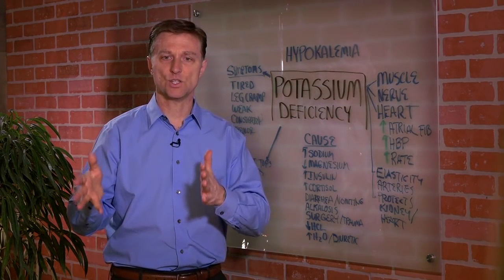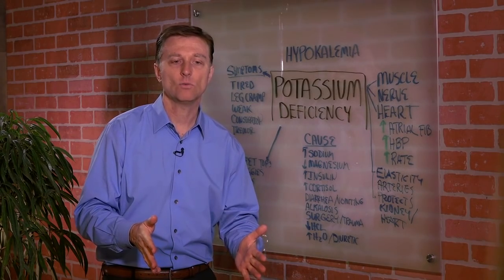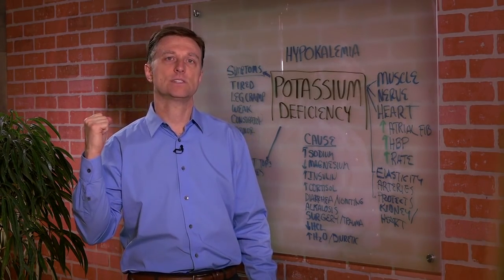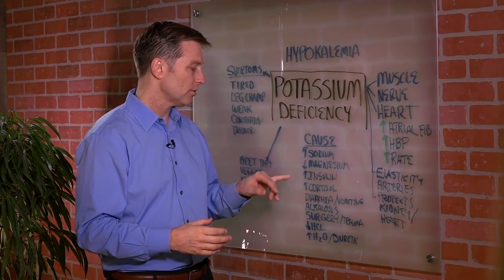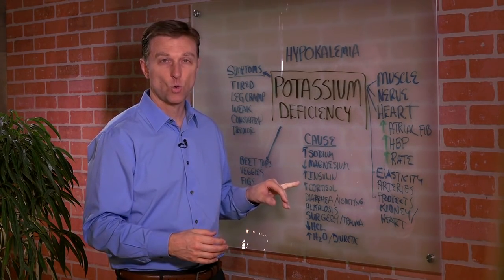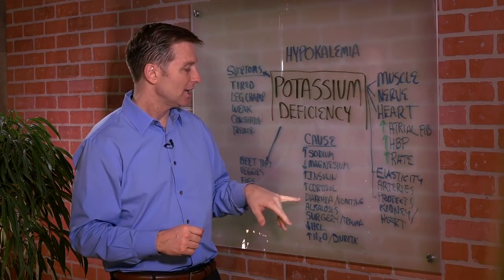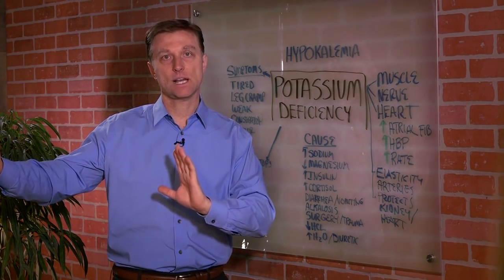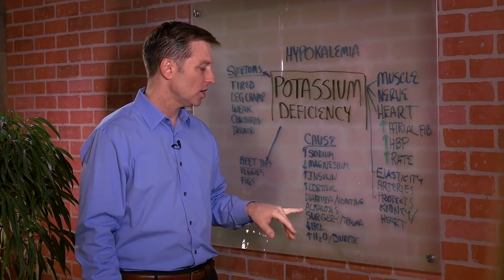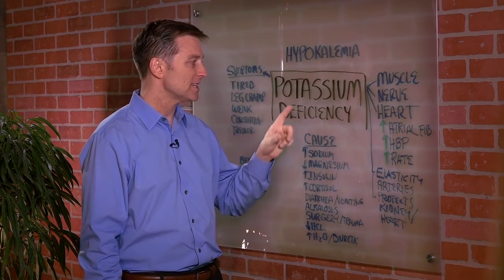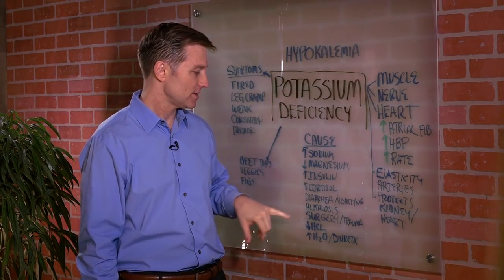Alkalosis is when your body is just too alkaline. And I know you've been taught that people need to just alkalize the body and all this stuff. Well, actually, when you go through a lot of stress and you have high levels of cortisol, your adrenal body type, your pH becomes more on the alkaline side. Your blood pH becomes excessively alkaline. And that's called alkalosis. And one of the symptoms is a potassium deficiency.